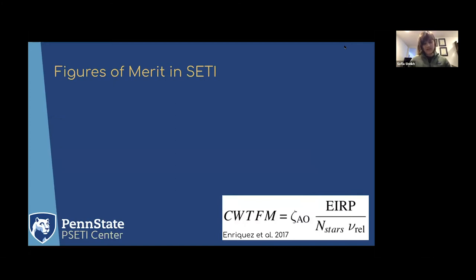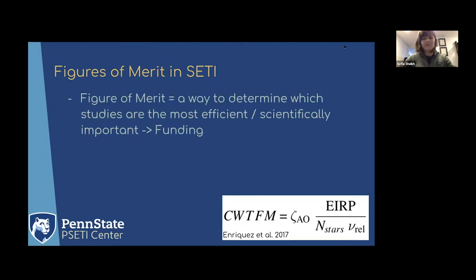So figures of merit are something that we think about in astronomy generally, but especially in SETI they've been pretty common on the radio side. When I say figure of merit, I mean a general sense of a way to determine which studies are the most efficient, which ones are going to make the most progress, and which are the most scientifically important. The obvious logistical link is towards funding—how do we make sure that we have a nice diverse strategy and that we're pursuing all the things that are going to make the most progress in the field.